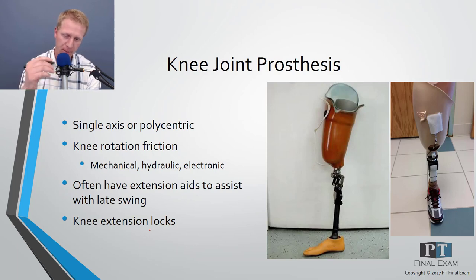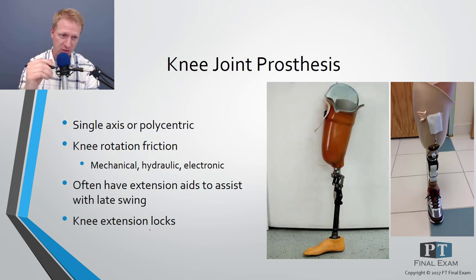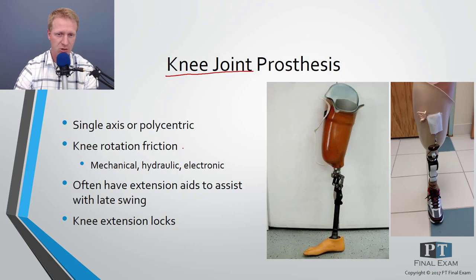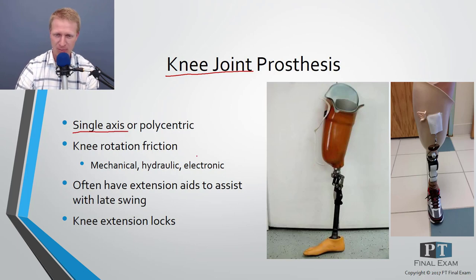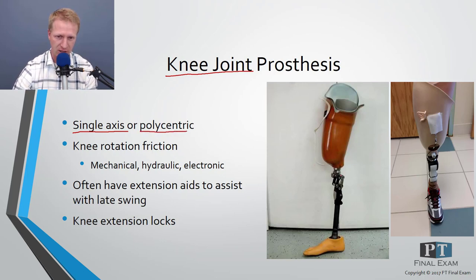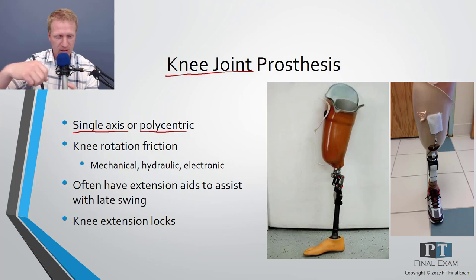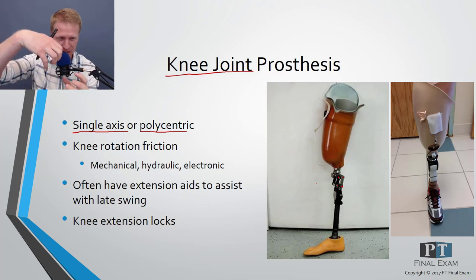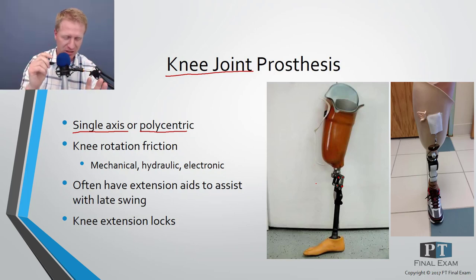For transfemoral amputations, a knee joint is required to replicate gait. Single-axis knees are just a pure hinge and don't replicate anatomical knee motion. Most prefer a polycentric knee — a four-point hinge pattern that travels backward as it bends, simulating the shape of the condyles on the tibial plateau.